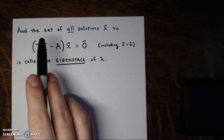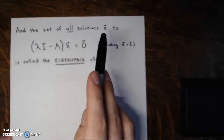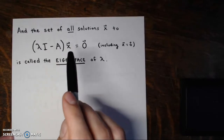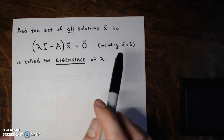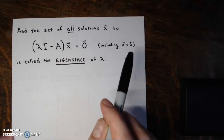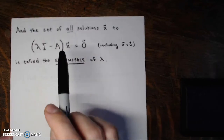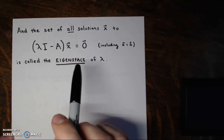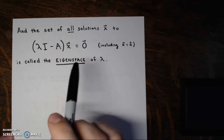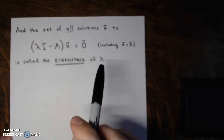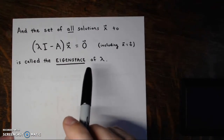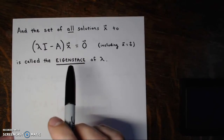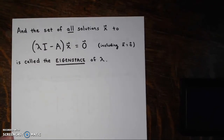The set of all solutions to this equation is called the eigenspace. The set of all vectors x that make this equation true, including the zero vector, is called the eigenspace of this particular eigenvalue lambda.